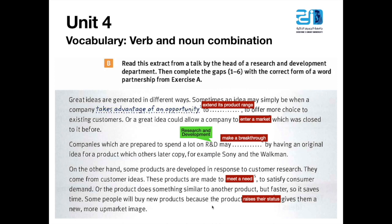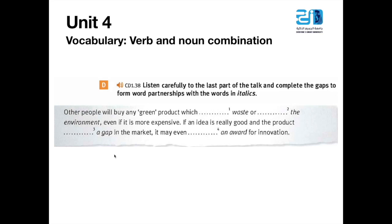Some people buy new products because the product raises their status, giving them a more upmarket image. Now we'll listen to a recording to complete gaps with the correct verbs combined with italic words: 'waste,' 'environment,' and 'gap' and 'award.' Listen carefully and find what type of verbs should be combined with them.